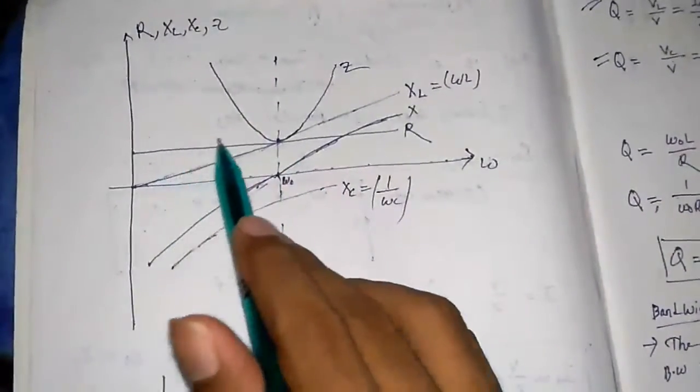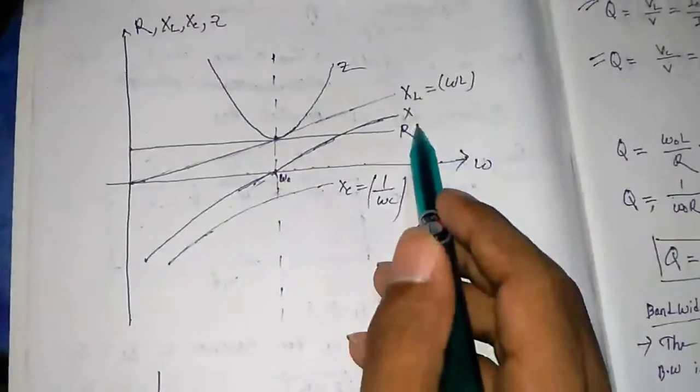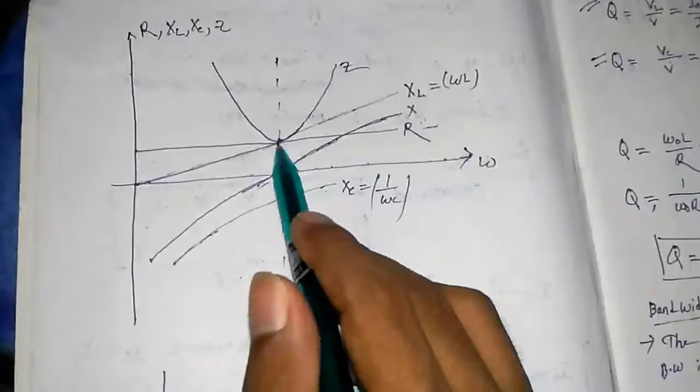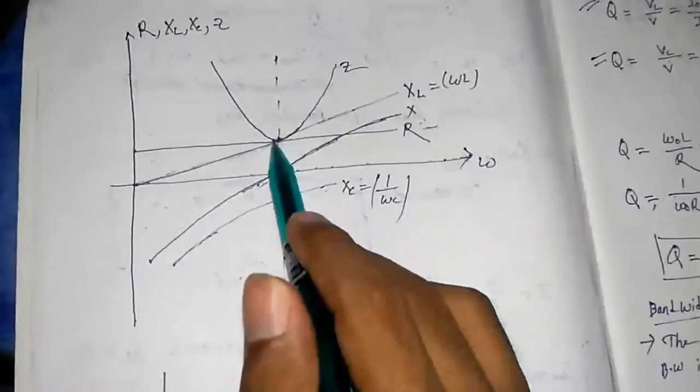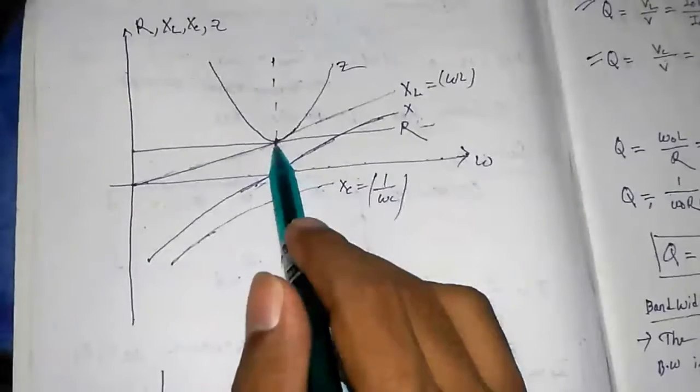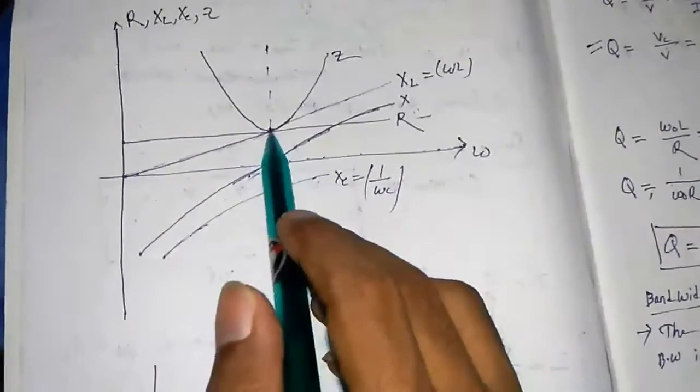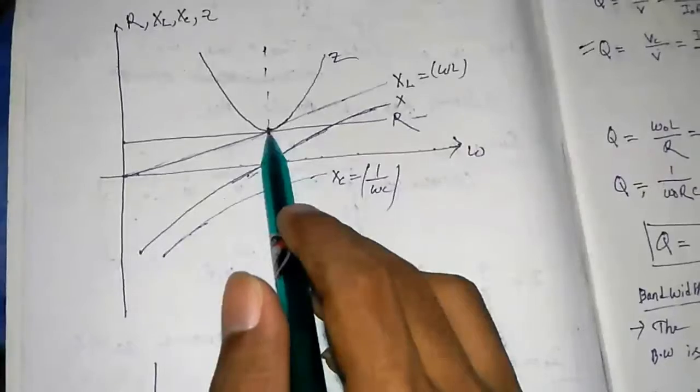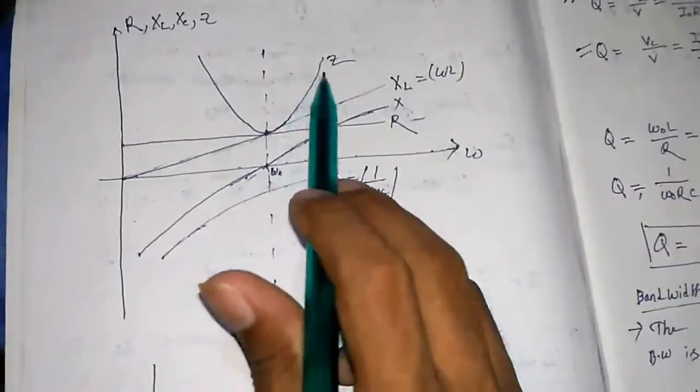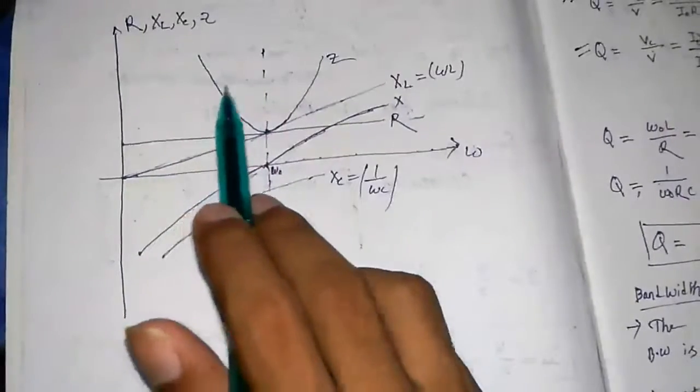You can see this straight line is of resistance. The impedance is exactly equal to this resistance, that is impedance is minimum. That means below the resonance frequency and above the resonance frequency, the impedance increases.